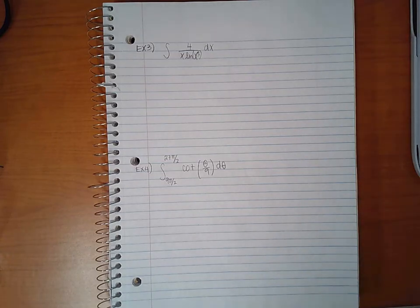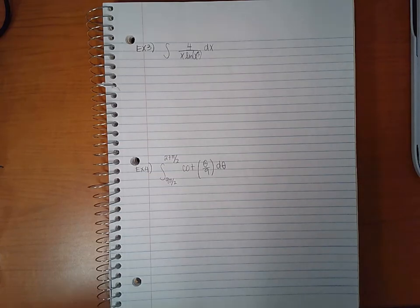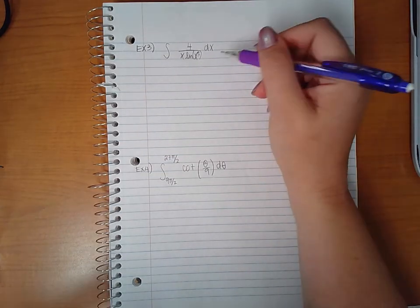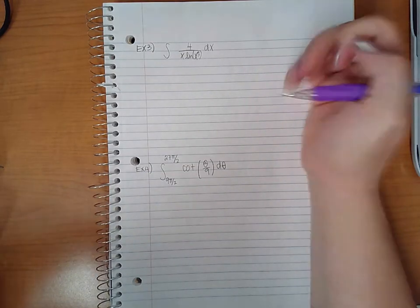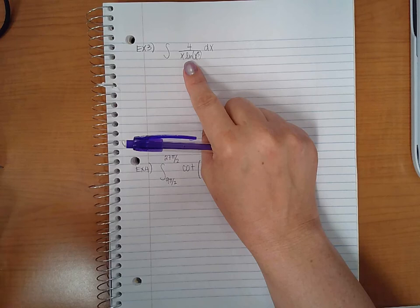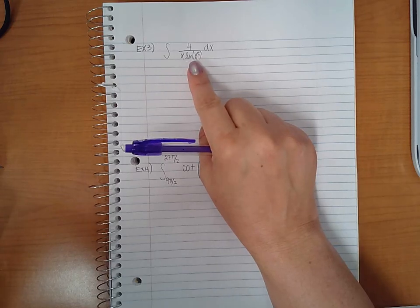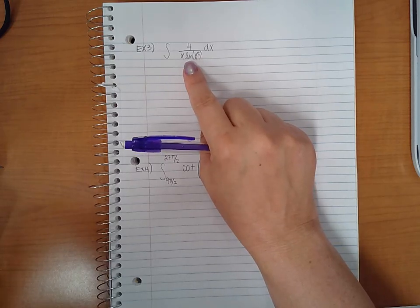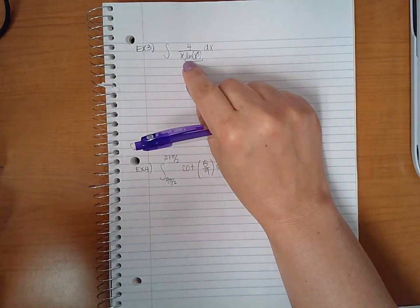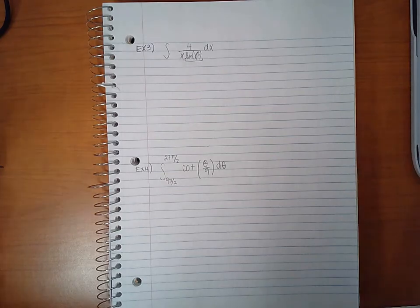This is part two of a natural logarithm integration section. We have to integrate this expression. Usually you let u be the more complicated part of the expression, but I notice that the more complicated expression here has an inner and an outer, which makes it twice as complicated.